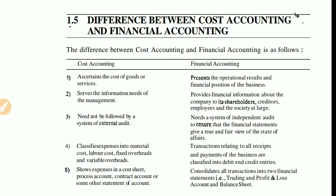The fifth difference: cost accounting shows expenses in a cost sheet, process account, and contract account. Financial accounting, on the other hand, consolidates all transactions into two or three financial statements — trading account, profit and loss account, and balance sheet.